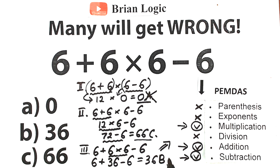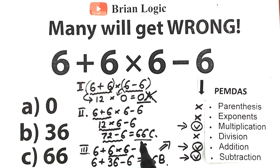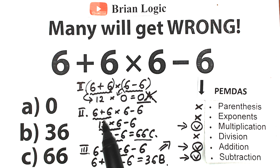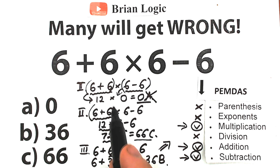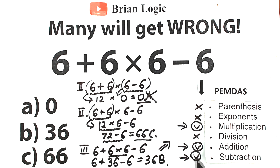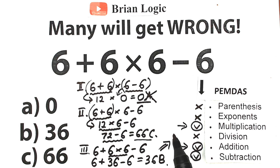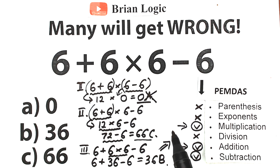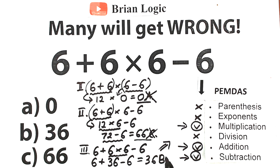For the 66 answer — Option C — I really hope you didn't choose that option. Addition right there is performed before multiplication, which is wrong. If you put brackets around (6+6), then 12 would have higher priority — but in our case, we don't have parentheses. We have a regular expression without any parentheses, so Option C is absolutely wrong.